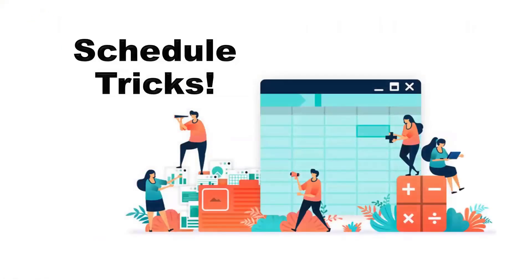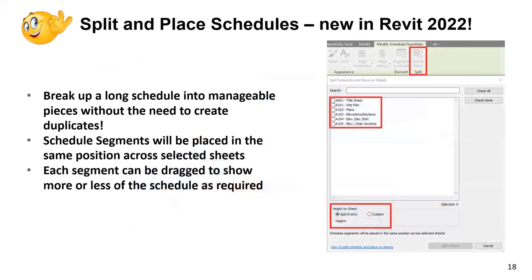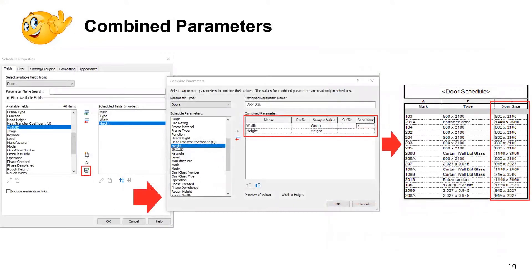I love playing around with schedules. Revit 2022 gives us a great tool to split schedules across multiple sheets. Previously you had to duplicate the schedule and crop or filter each copy. Now you can select the schedule and choose which sheets you want the pieces placed on — it makes life so much easier.